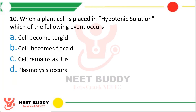Question 10: When a plant cell is placed in hypotonic solution, which of the following events will occur? Option A: cells become turgid. Option B: cells become flaccid. Option C: cells remain as is. Option D: plasmolysis occurs. The correct answer is option A — the cell becomes turgid. To summarize: hypertonic solution causes plasmolysis, isotonic solution makes cells flaccid, and hypotonic solution makes cells turgid.